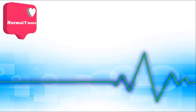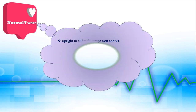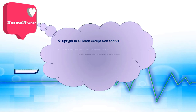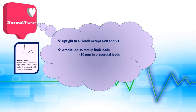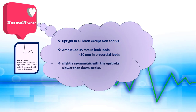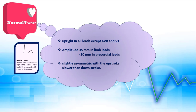Let's start with normal T wave features. T wave is the most variable part of the EKG. In general, we expect T waves to be upright in all leads except AVR. The amplitude is usually less than 5 millimeters in limb leads and less than 10 millimeters in precordial leads. They are slightly asymmetric, with the upstroke slower than the downstroke.